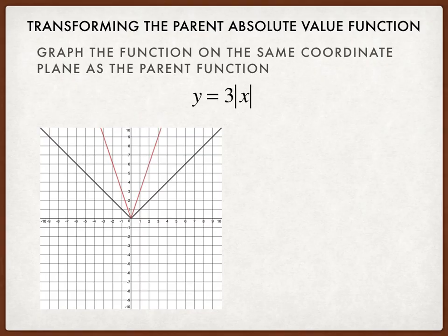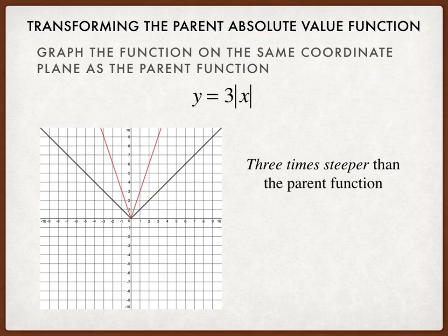The resulting curve will be three times steeper than the parent function. The slope of the parent function is 1 and negative 1. The slope of this particular function is 3 and negative 3. And that happens when you have a number being multiplied by the absolute value expression. It will change the steepness.